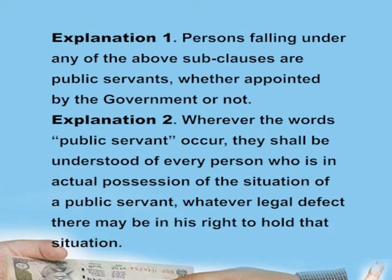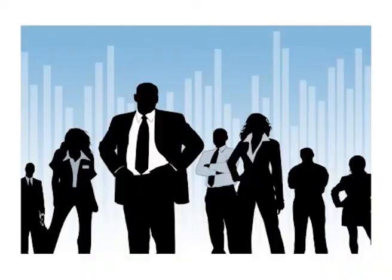The explanation says persons falling under any of the above sub-clauses are public servants whether appointed by the government or not. Explanation 2 says wherever the word public servant occurs, it shall be understood of every person who is in actual possession of the situation of a public servant, whatever legal defect there may be in his right to hold that situation. This section covers 12 categories of persons irrespective of whether they have been appointed by government or not; they are under the purview of the definition of public servant.